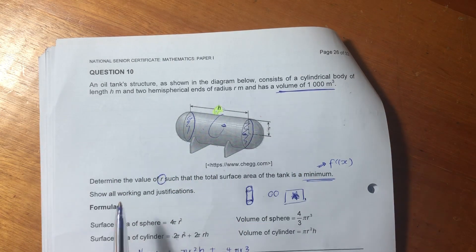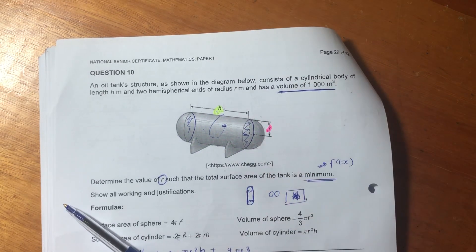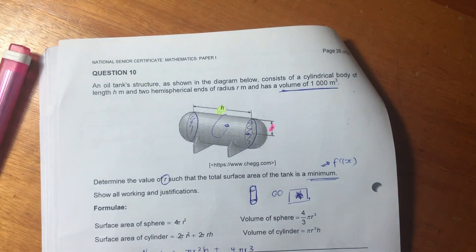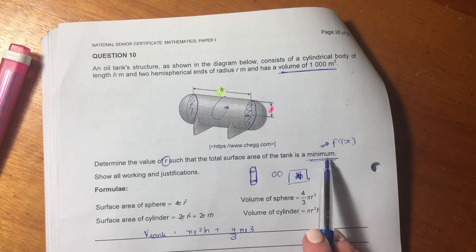Both of those measurements are in meters, and has a volume, they've given us a volume, that's important. Then it says here, determine the value of r such that the total surface area of the tank is a minimum.